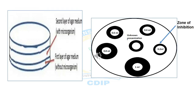This image shows the cup plate method. One picture shows the two-layer formation, and the second shows the zone of inhibition — the area where the microorganisms are killed by the antibiotic sample.